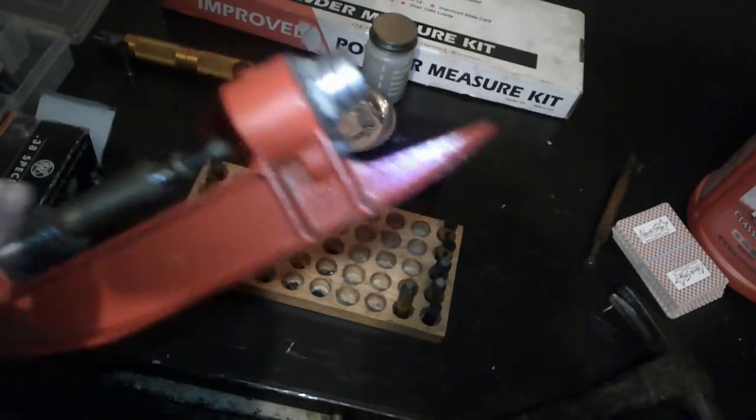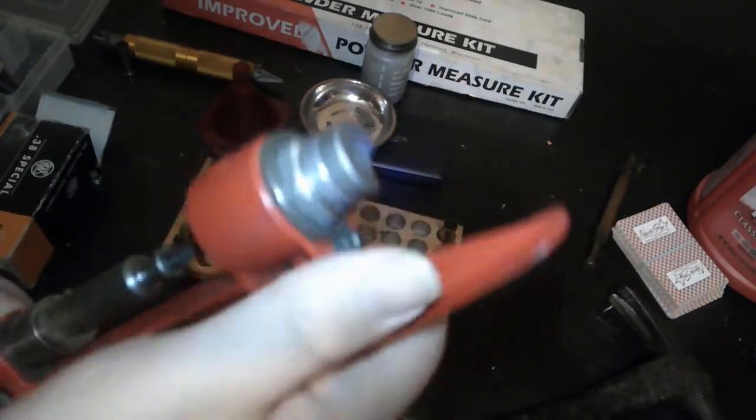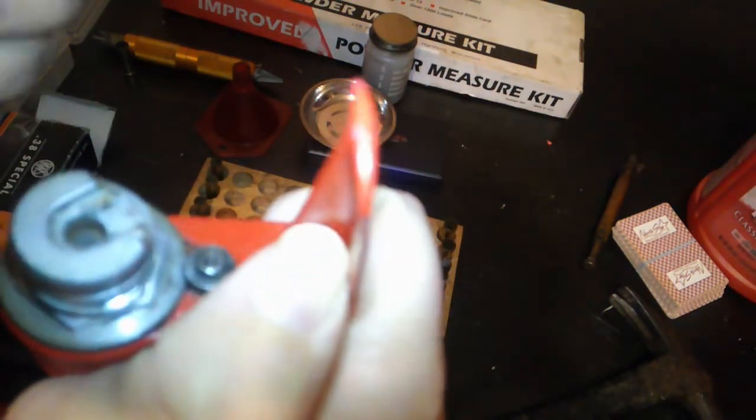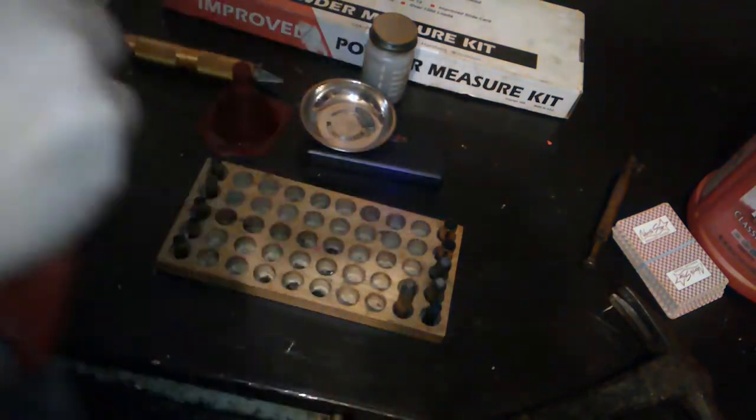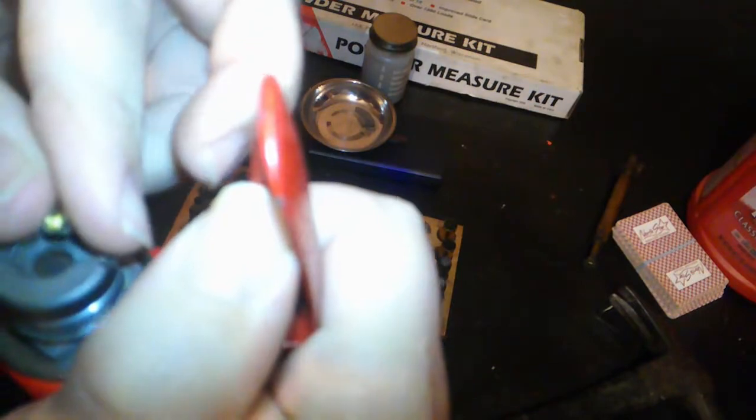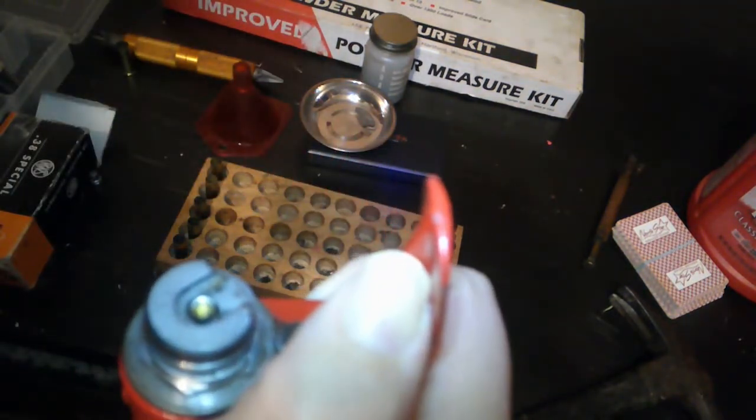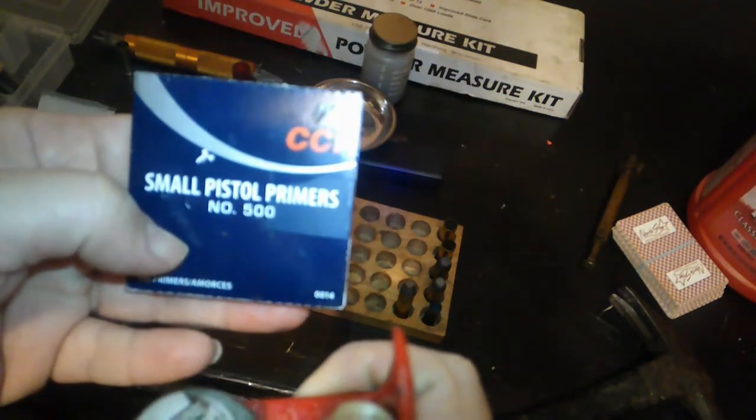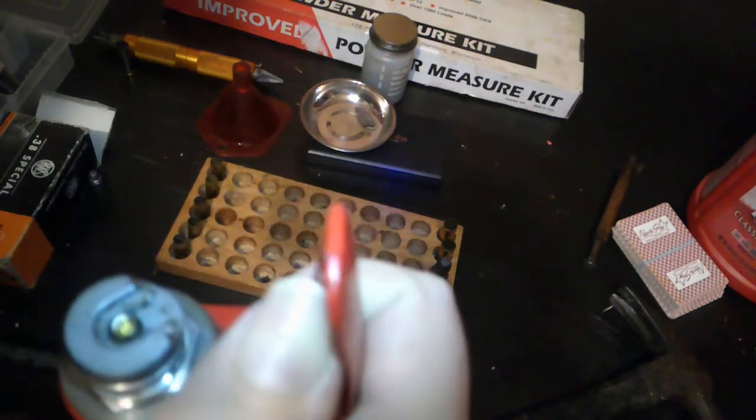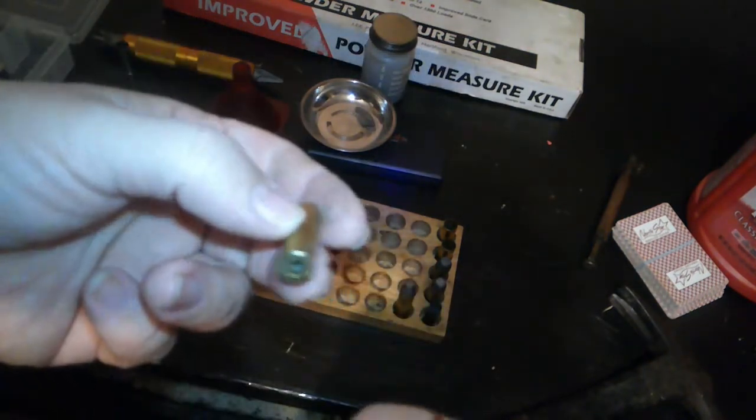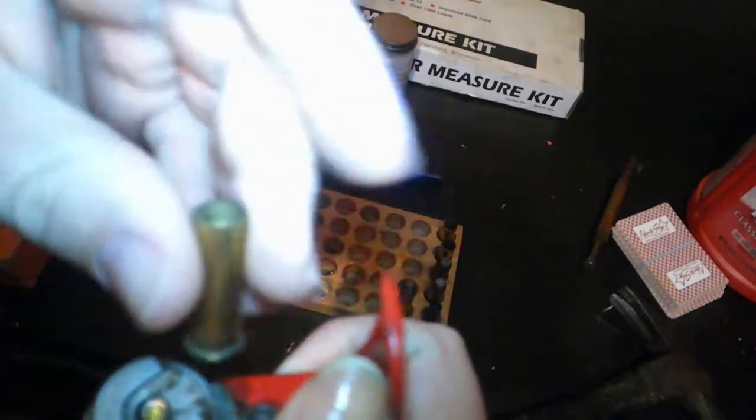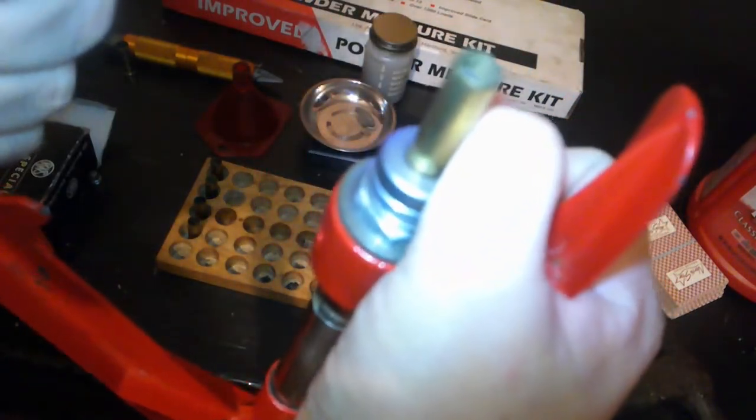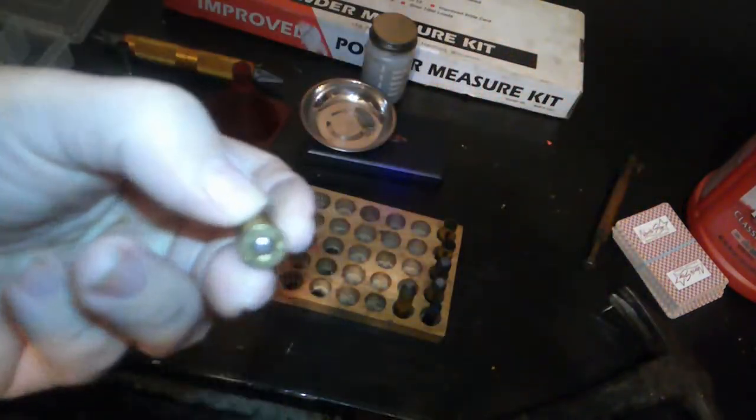Okay, so you put in your priming die on your shell holder, bring it flush. These take small CCI small pistol primers 500. Then you just take your deprimed shell, slide it in. Like a nutcracker, you just bring it up. That's why I call it the nutcracker.